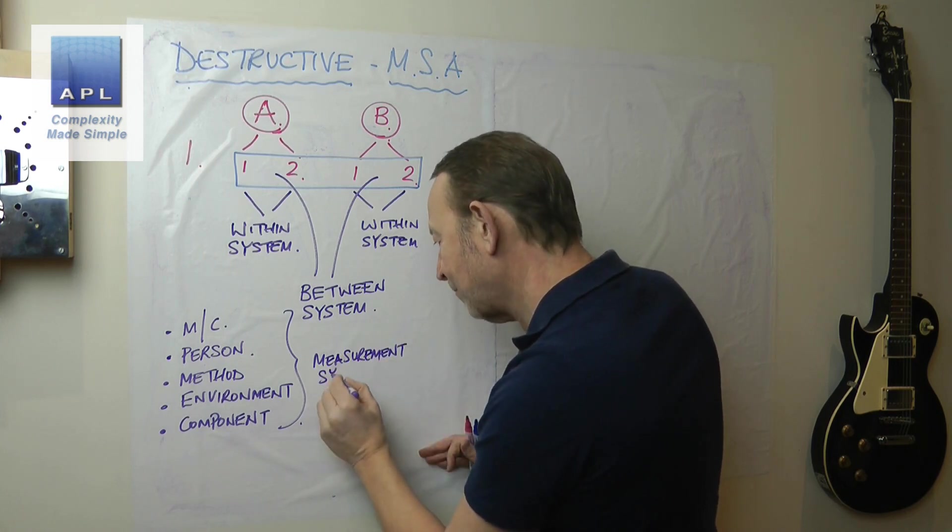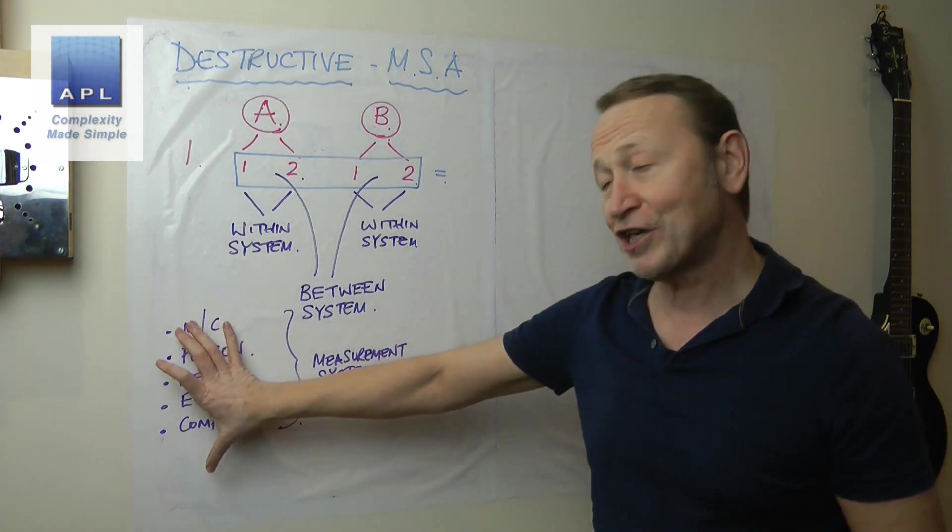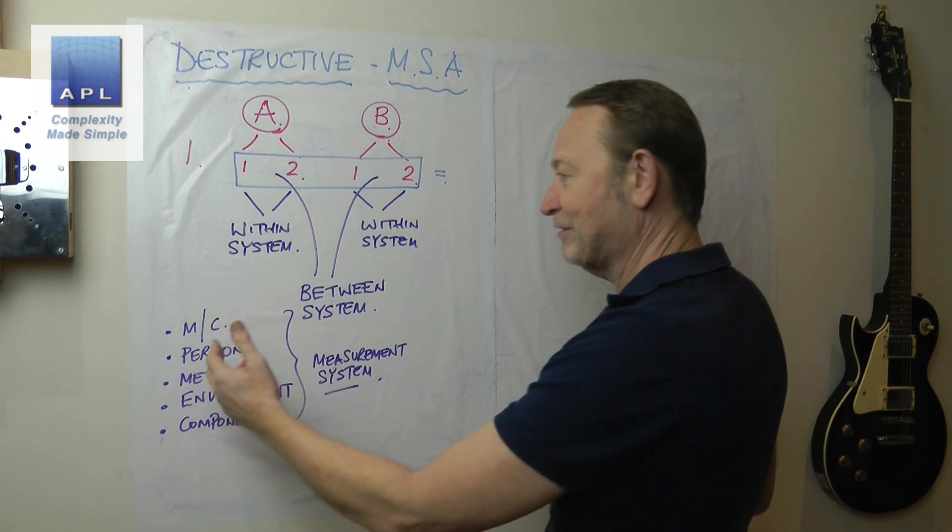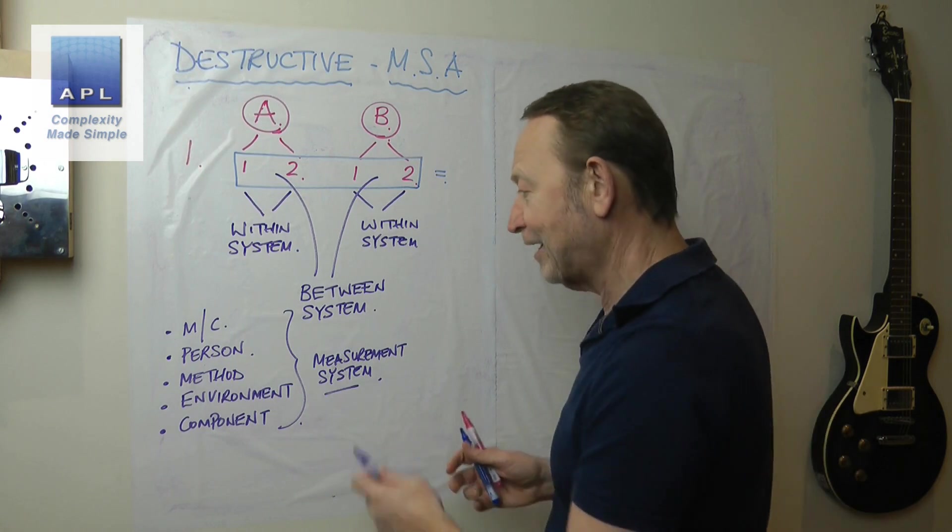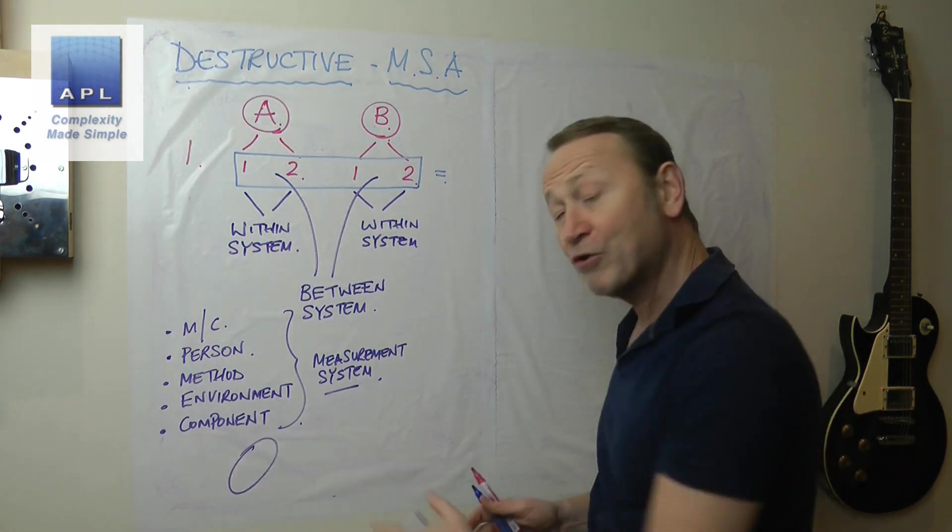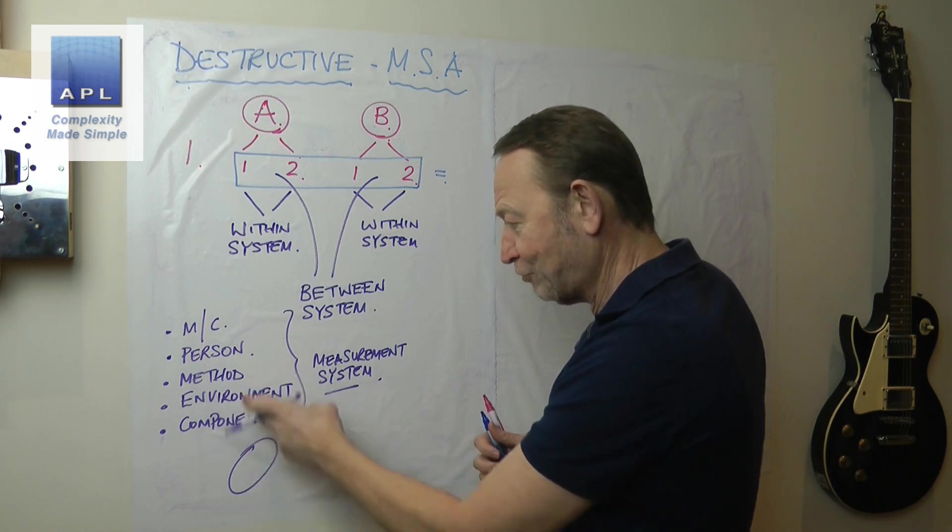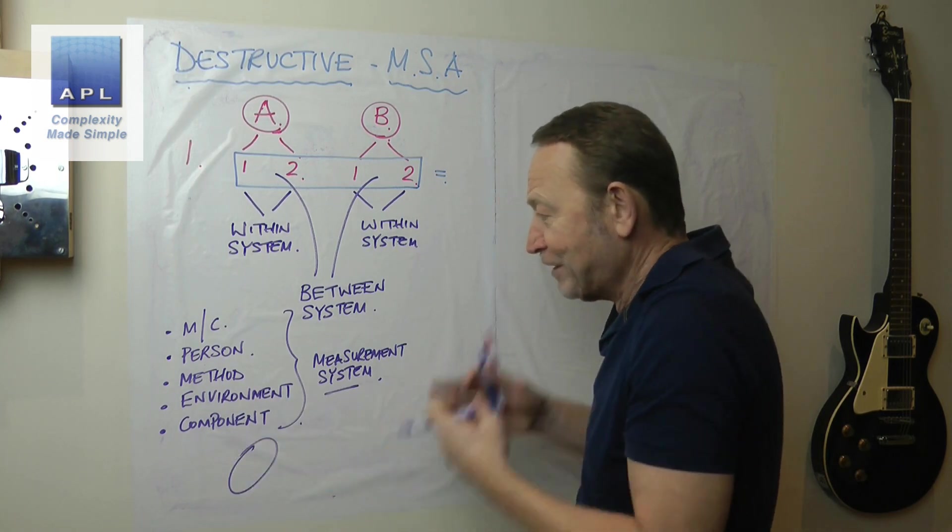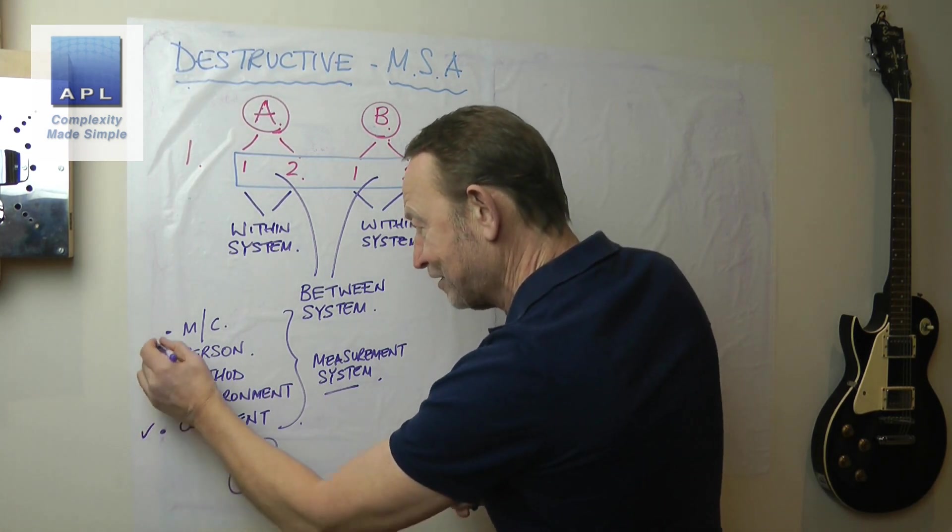So when we talk about error and we see the error in the MSA, that's the system, and we can only assess it as within or between. We have no way of saying the machine is causing it, the person is causing it, the method is causing it. If the component isn't round, if it's oval, of course the component starts to cause measurement error, but the method that you're using will create measurement error for that. The machine that you've chosen to use will create error, so the error that comes from measuring that is created by all of these.